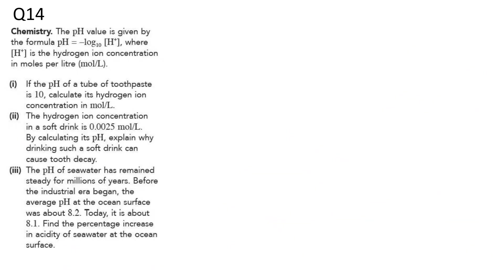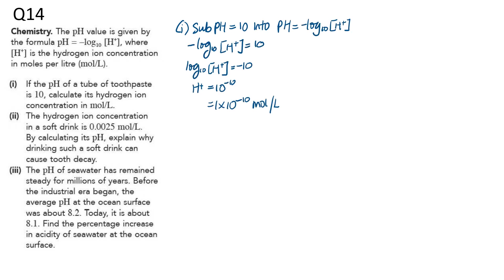Now back to the questions on pH value — this time for toothpaste, soft drink, and sea water. These questions are easy to score. For part (i), the pH level of a toothpaste is 10. Substitute pH equals 10 into the formula, multiply both sides by negative 1 to get negative 10, then convert to index form. The base is 10, so H-plus is 10 to the power of negative 10. The hydrogen ion concentration in the toothpaste is 1 times 10 to the power of negative 10 moles per liter.